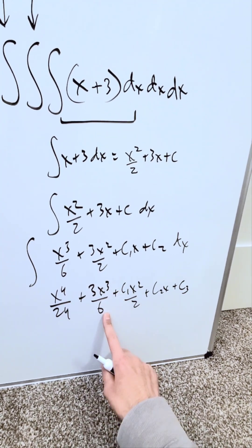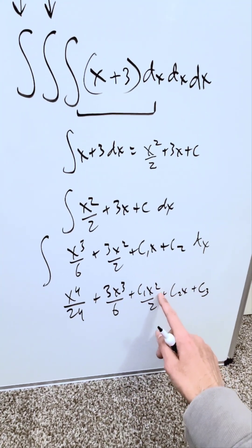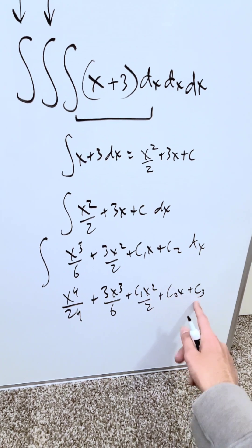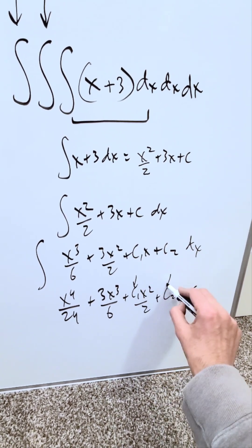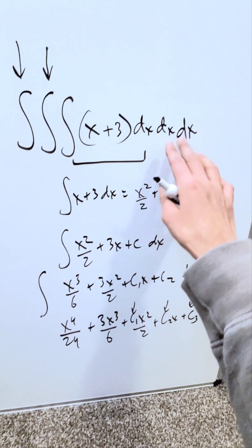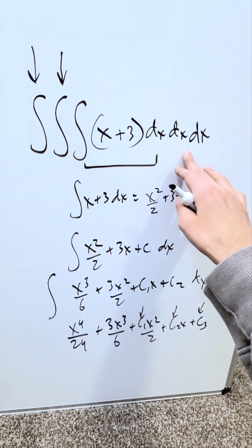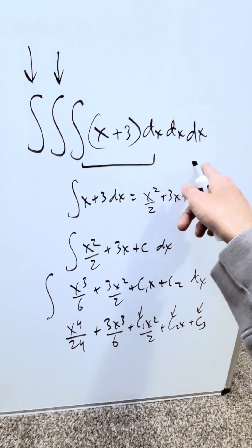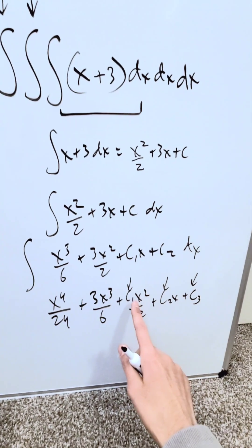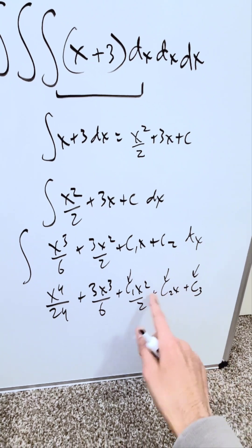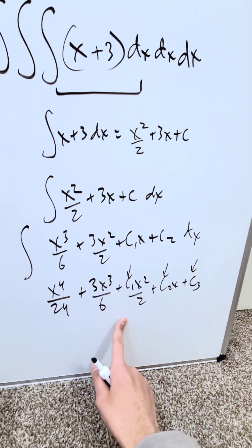x to the power of 4 over 24 plus 3x cubed over 6 plus c1x squared over 2 plus c2x plus c3. The only way you can determine these c values is you'd need to know the conditions involved with the experiment or phenomenon this is associated with. Those would give you these values based on your initial conditions. This would be a correct answer.